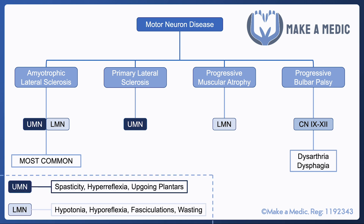In case you need a little prompt about the differences between upper and lower motor neuron signs, they can be seen at the bottom left. The key points to remember are the different types of motor neurons involved, because common exam questions focus on describing either upper motor neuron signs or lower motor neuron signs, or both, and asking you to figure out which of these diagnoses is most likely.